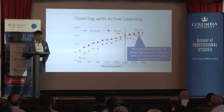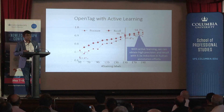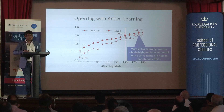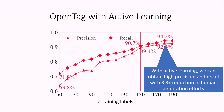A typical problem with deep learning applications is that they are data hungry, but getting manually annotated data is expensive and time consuming. So we developed this system with active learning, where the system starts with a very small set of annotated samples — say 50 — and then interactively and iteratively asks a human to label some informative samples from which it can learn better. With this, we were able to obtain more than 90 percent precision and recall, and reduce human annotation effort by 3.3x.